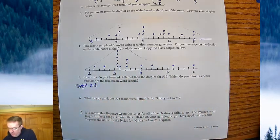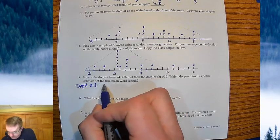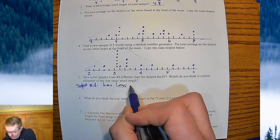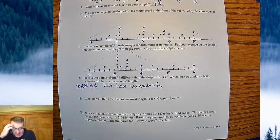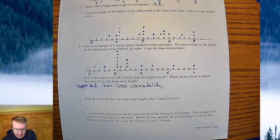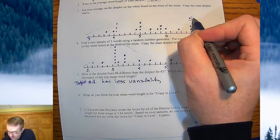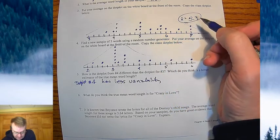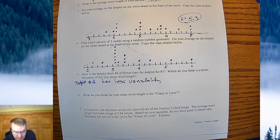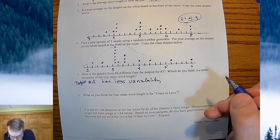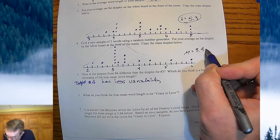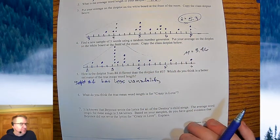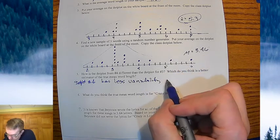So dot plot number four has less variability. And what's the mean here? So we go through and do all the mean, the mean up on the top one, if I remember correctly from last year, this had a mean of 5.3. This one down over here had a mean of, my mean here was, I think, 3.46.